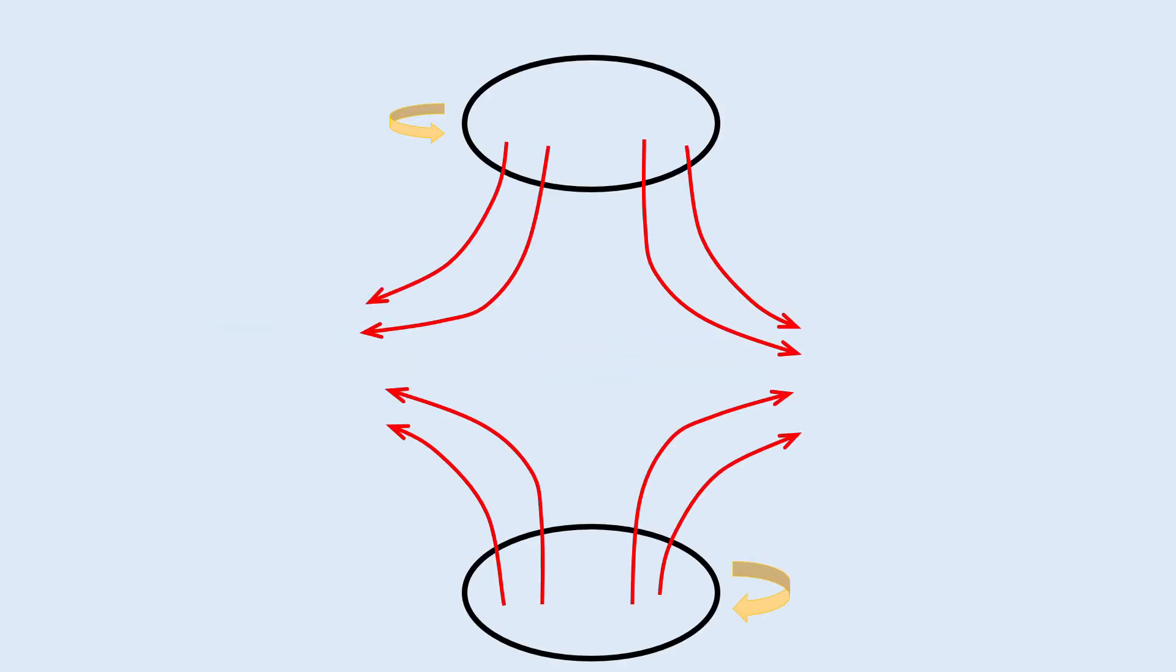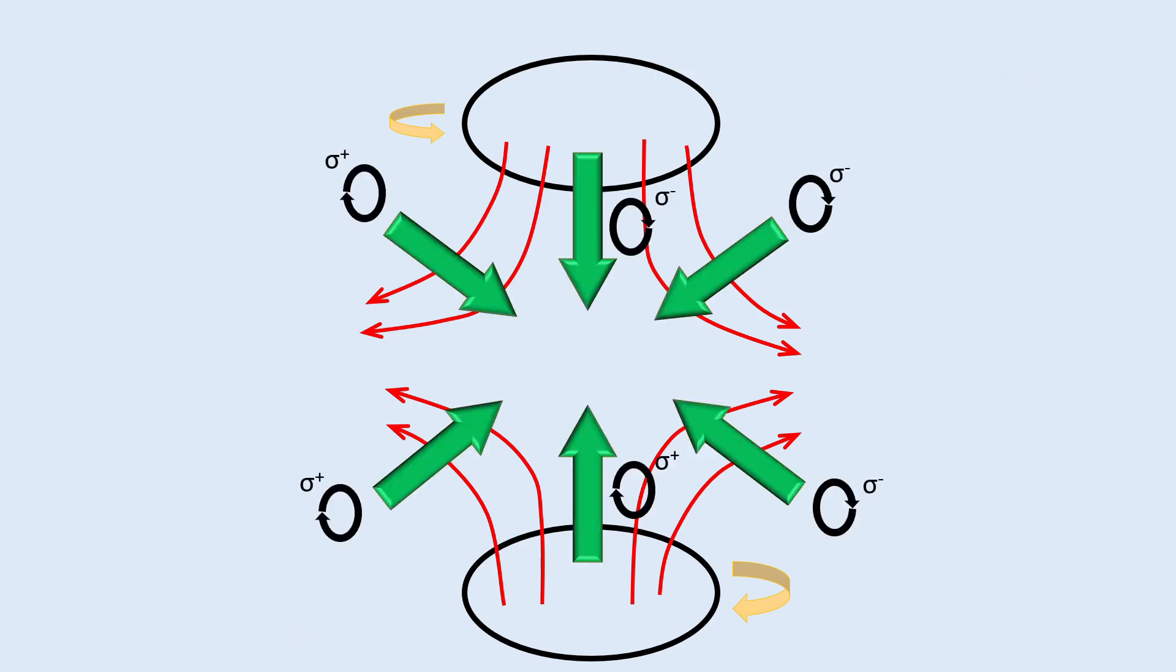But what do the cooling methods we've discussed so far look like in practice? Enter the optical magnetotrap, the most commonly used apparatus to bring atomic gases down to the sub-Kelvin temperature range. The idea is relatively simple. First, we generate a spatially varying magnetic field using two conductive coils with oppositely running currents, referred to as an anti-Helmholtz configuration that you can see on the screen now.